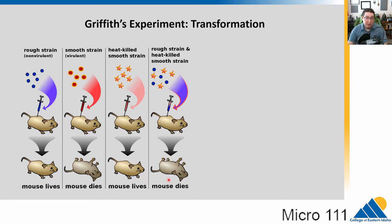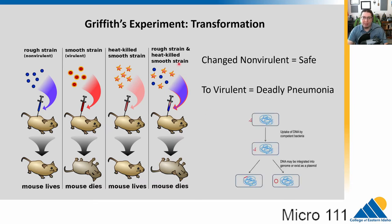Griffith called this process transformation because he was able to transform the non-virulent rough strain into one that could kill the mouse. He didn't understand the basis of this — it was well before we understood that genetic material was DNA. But many years later, people realized that in Griffith's experiment, the non-virulent cells were taking up DNA from the heat-killed smooth strain and incorporating it, transforming the non-virulent ones into virulent ones and making them deadly.